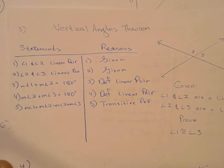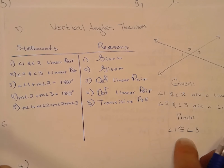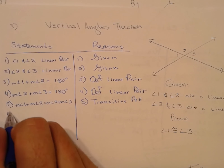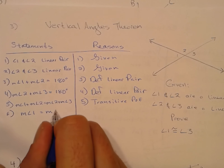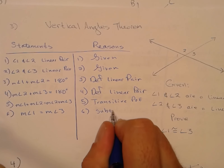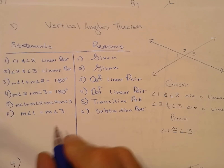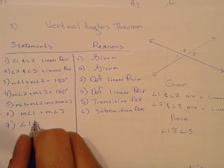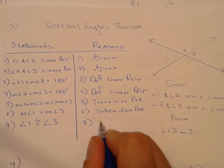We have the angles we're trying to prove congruent in the same equation, so now we can subtract the measure of angle two from both sides using the subtraction property of equality. And then if the two measures are equal, the angles are congruent by definition of congruence.